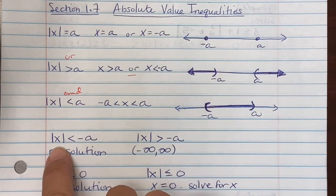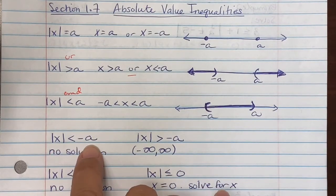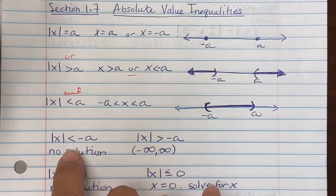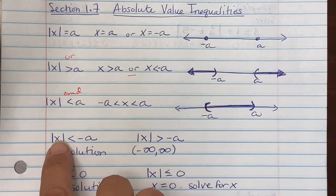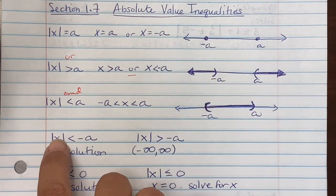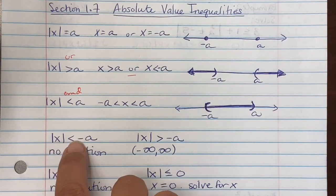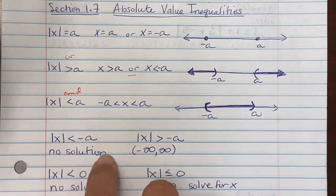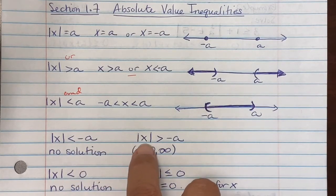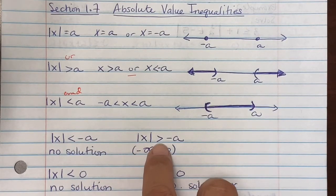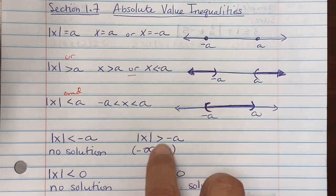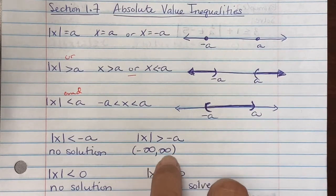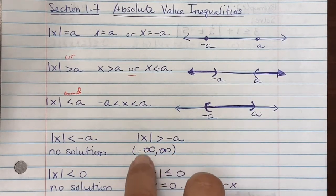Some other special situations: if your problem says absolute value of x is less than negative a, that is no solution. If you stick a negative number in the absolute value it comes out positive, and a positive number cannot be less than a negative number. But if absolute value of x is greater than negative a, the solution is all real numbers — negative to positive infinity.